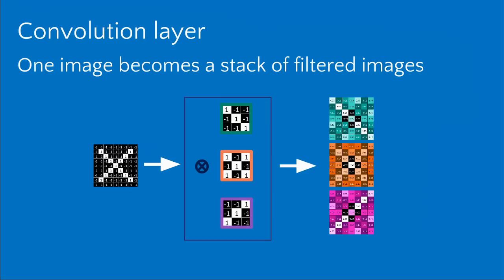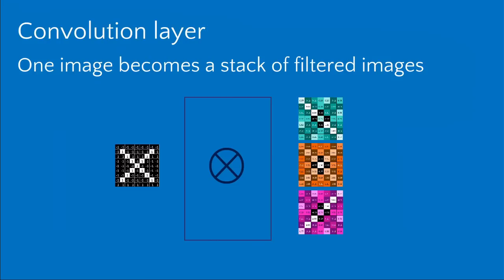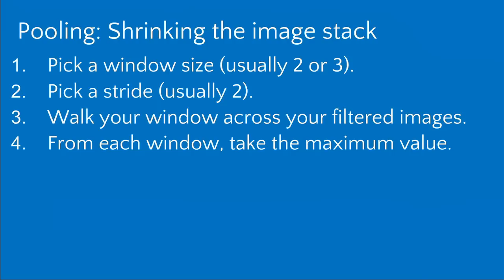This is what a convolution layer in a convolutional neural network does. It has a set of features — three, thirty, three hundred, or three thousand — and it takes the original image and returns a set of filtered images, one for each feature. That is the number one ingredient, the magic special sauce: it's not a perfect match, but it's still a pretty good match because the convolution moves the feature across the image and finds everywhere it might match.